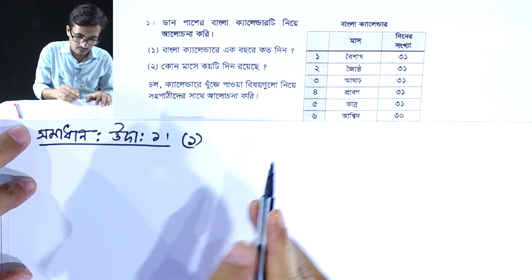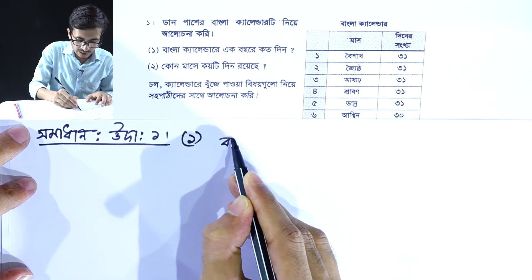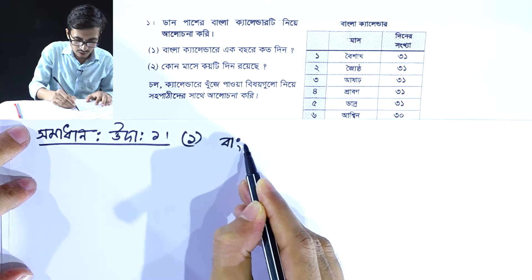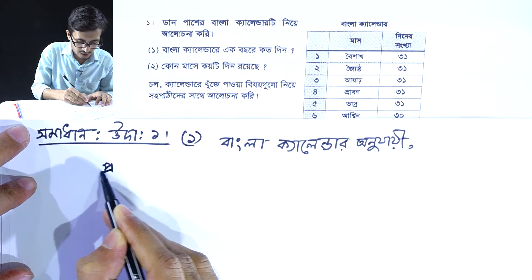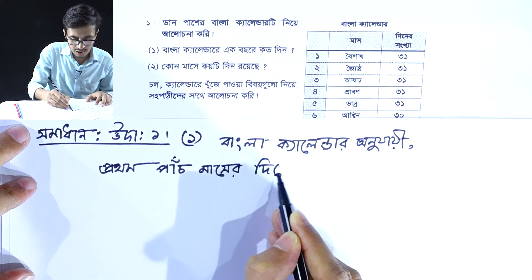બાંળા ગેહૃમ માશ કંતો — how many months of the Bangla year have passed — and how many days have been completed in the remaining months, that is what we need to count.